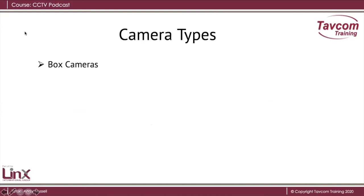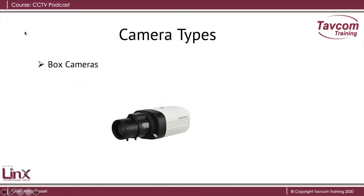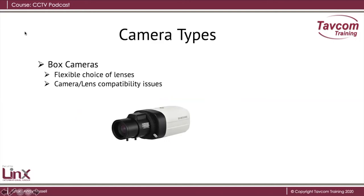Camera types. A box camera — traditionally all of our cameras were box cameras. When you bought the camera, it didn't have a lens on it and you chose the lens that you wanted. This gave us a very flexible choice of lenses, but it did introduce a lot of camera and lens compatibility issues. And of course, if you wanted to put it outside, you'd require a housing to protect it from the elements.